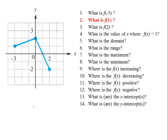What is f of 1? When x is 1, y is 0. So we say f of 1 equals 0.